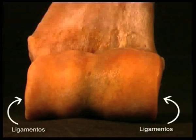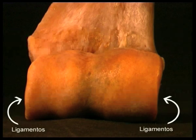In each epicondyle, the corresponding collateral ligaments of the elbow joint are also attached.